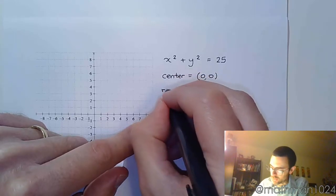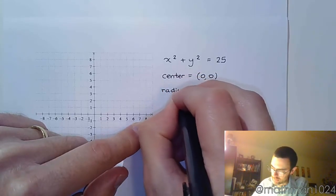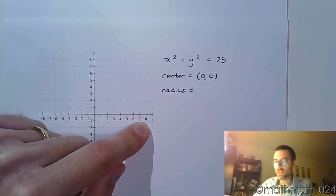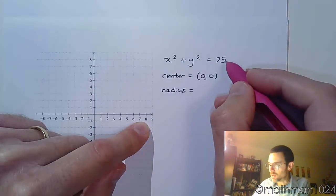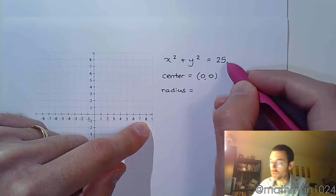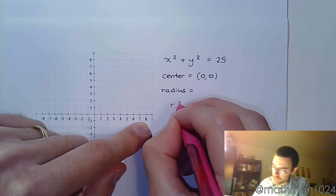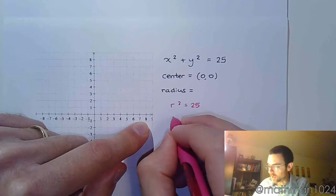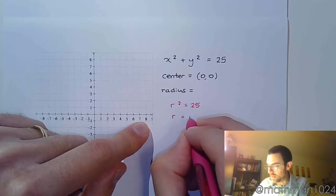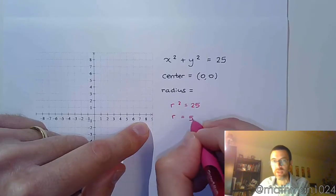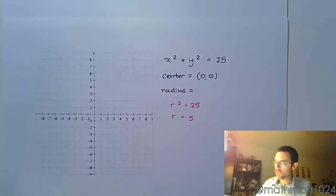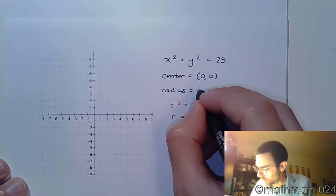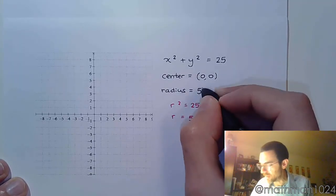Make sure you understand this: the 25 is going to be your radius squared. So you say r squared equals 25, solve that equation, and you find that r equals 5. So we've got a circle centered at the origin (0, 0) with a radius of 5.